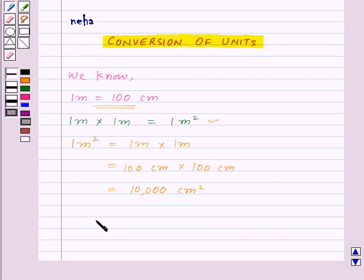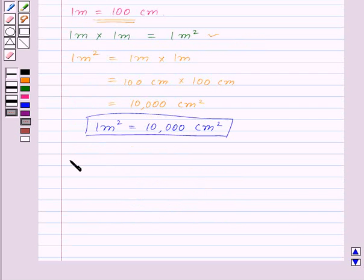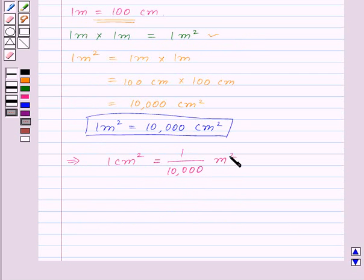Thus, 1 meter squared is equal to 10,000 centimeters squared. From this, we can also say that 1 centimeter squared will be equal to 1 upon 10,000 meters squared.